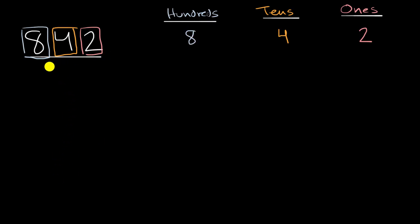So this number, which is 842, it's the same thing as eight hundreds plus four tens plus two ones. Or another way to think about it is,